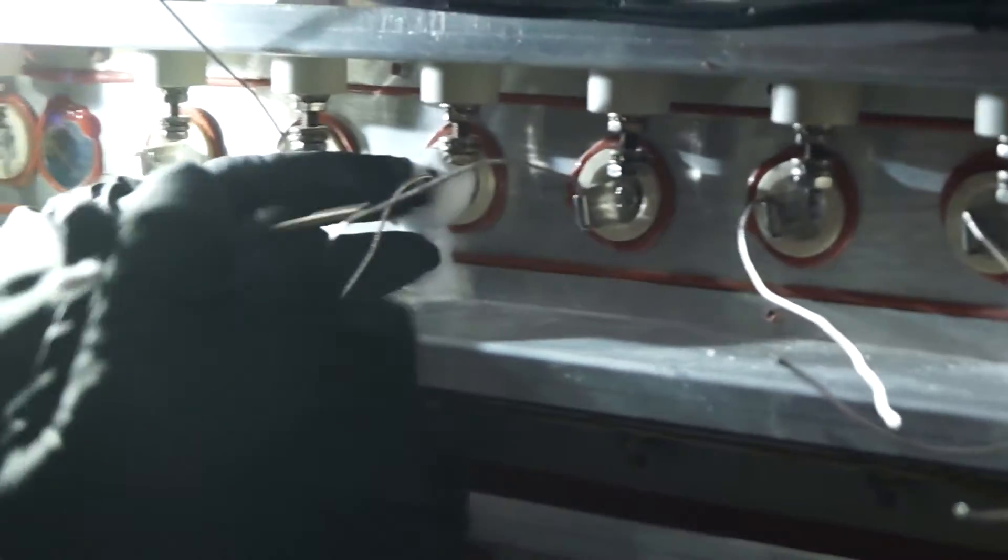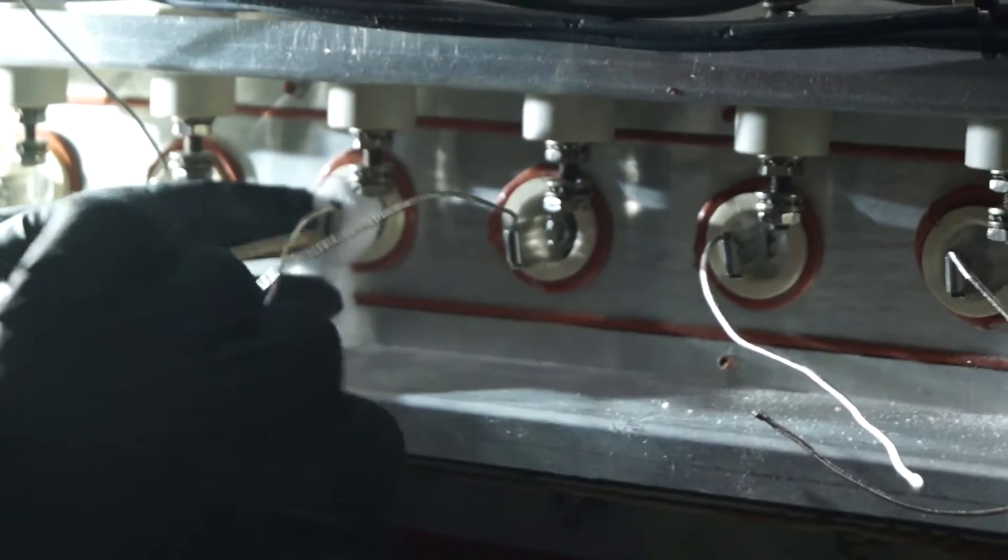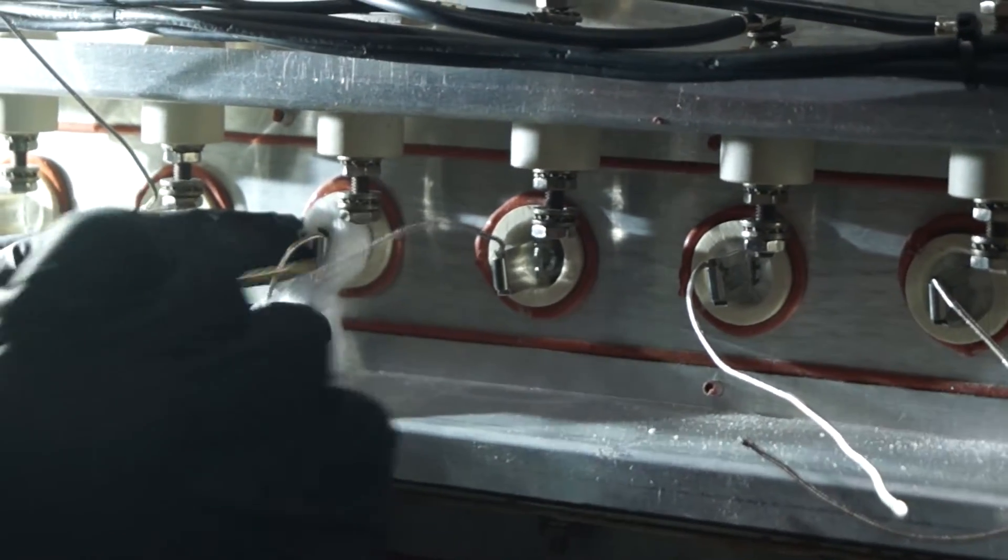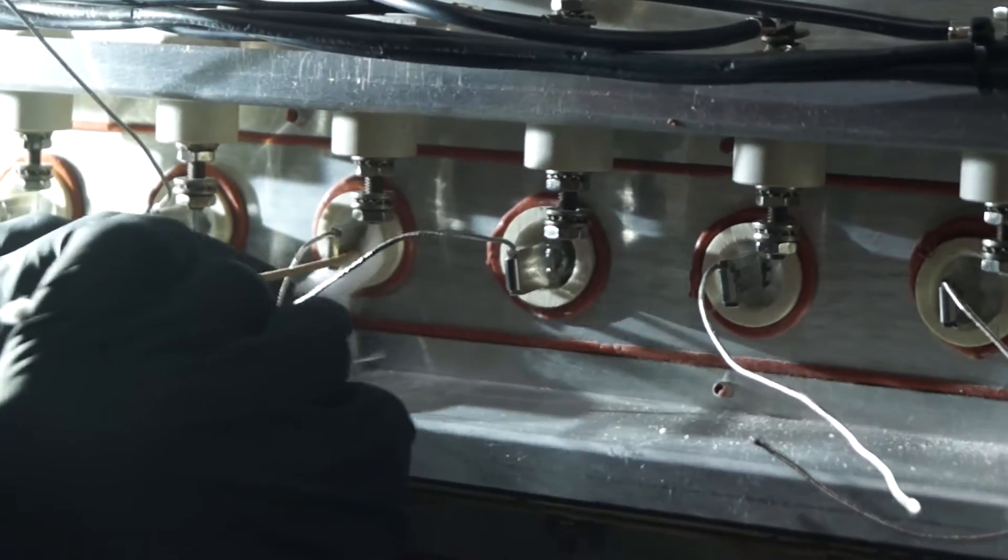You want to do it evenly so that you don't have any movement upwards, downwards, left or right, so it's even and the bulb is dead center of the ceramic insulator.